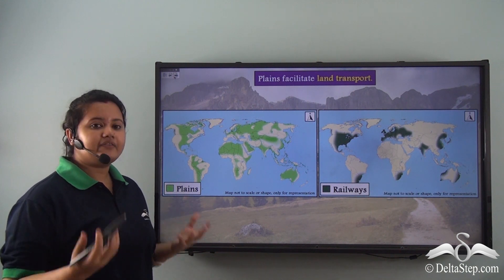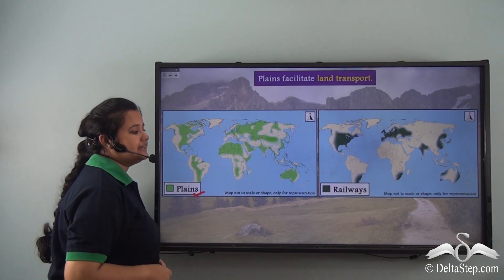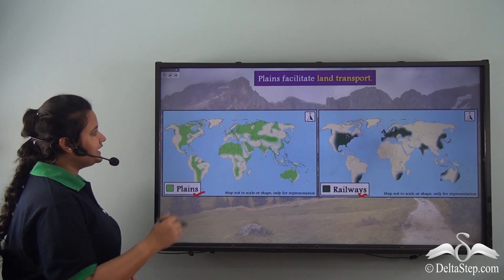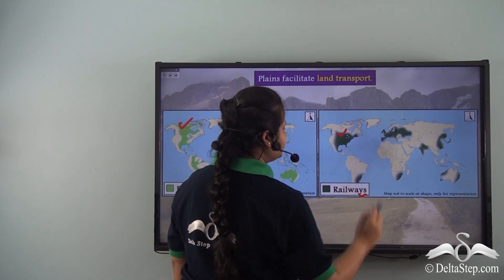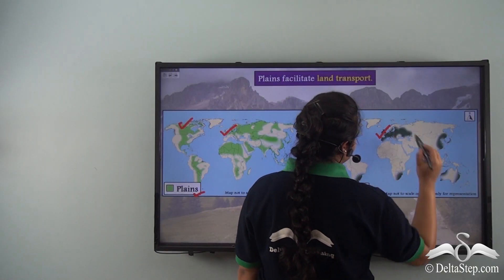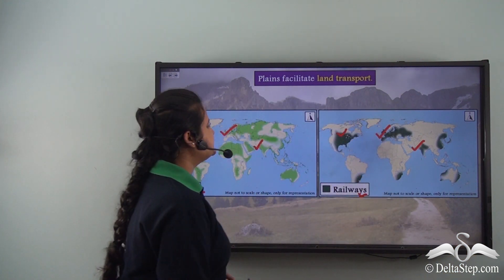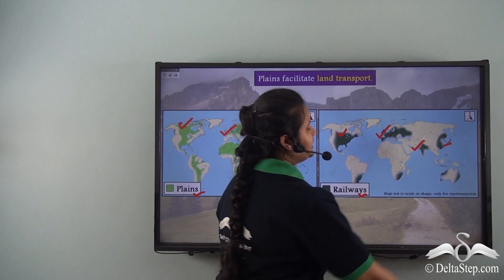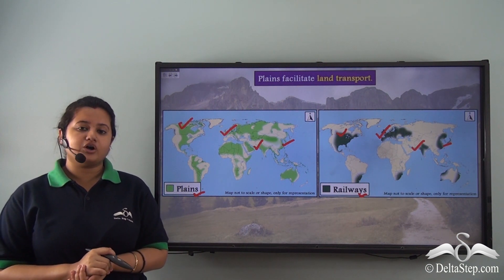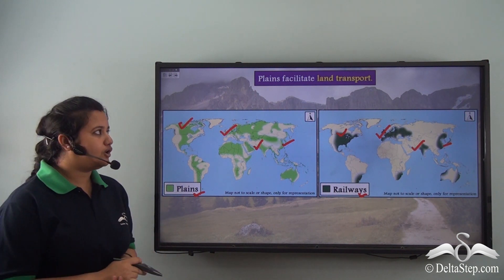Compare these two maps: the first shows the plains of the world, and the second shows the railway networks of the world. The areas of plains coincide with railway networks — in Europe, India, and China alike. Plains have a flat terrain on which we can easily develop land transport. Thus plains facilitate development of land transport.